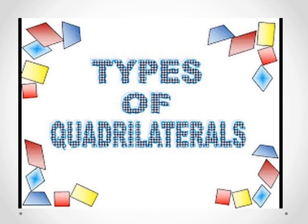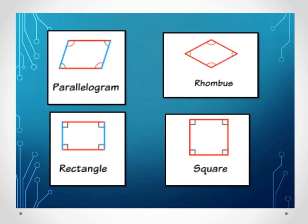Now, types of quadrilaterals. Here we see a parallelogram. Opposite sides of a parallelogram are parallel and equal to each other. Opposite angles of a parallelogram are equal to each other, and diagonals of a parallelogram bisect each other.